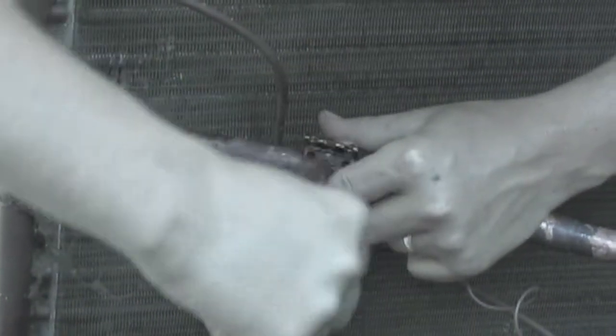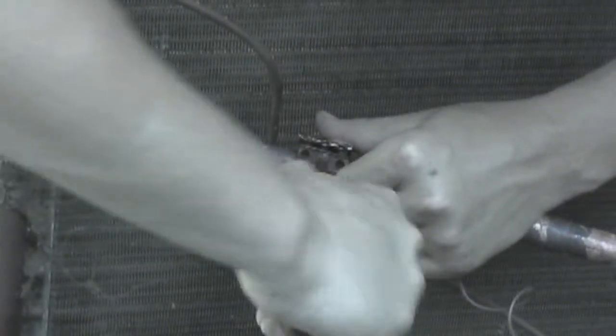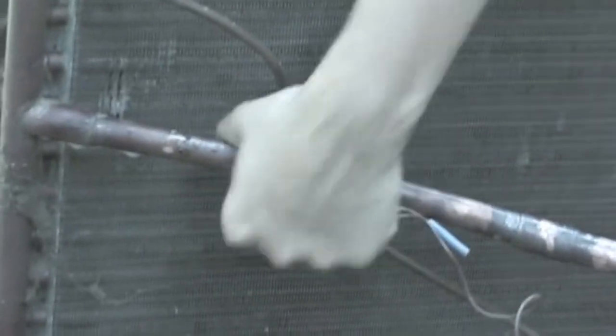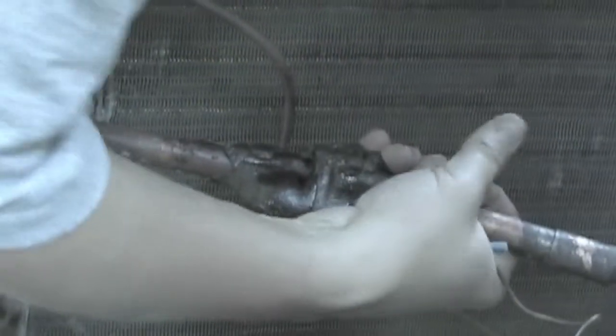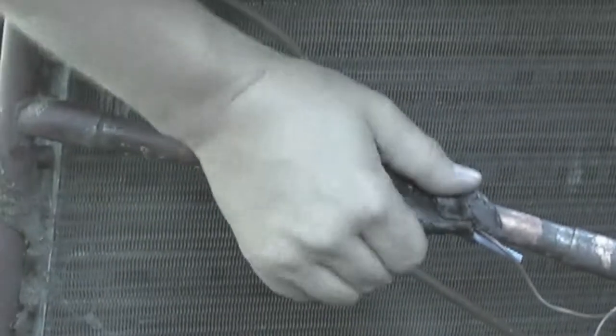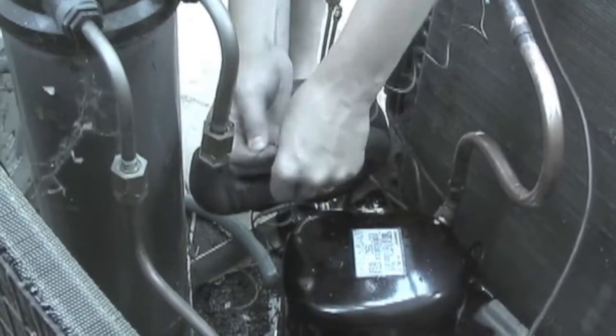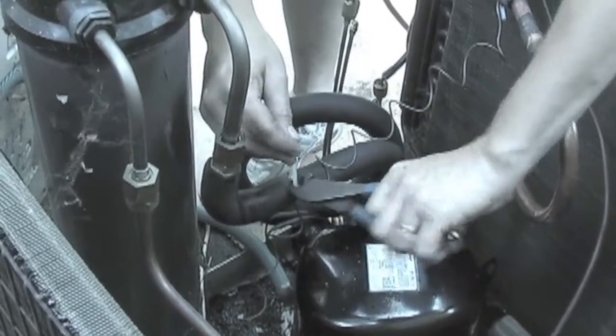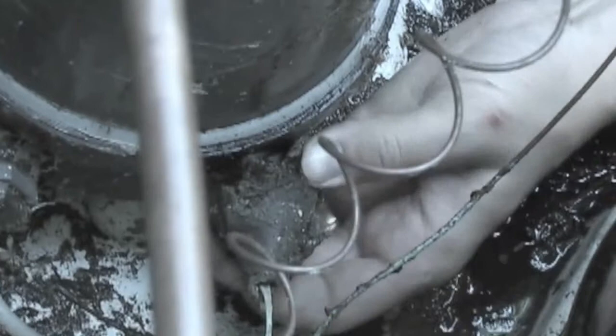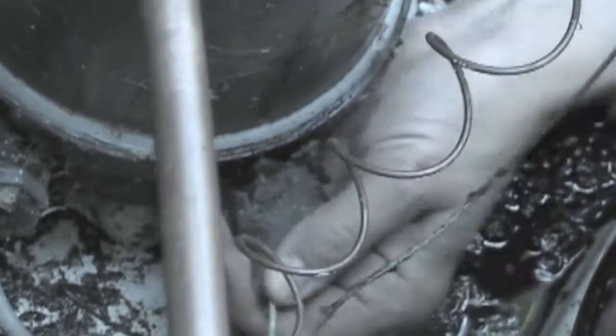Reattach the TXV bulb to the suction line. Make sure that it's on the side of the suction line, not the top or the bottom. Apply cork tape to the TXV bulb to insulate it from the outside air. Secure the capillary to prevent rubbing with other parts of the heat siphon. Reinsert the thermostat bulb into the heat exchanger and insulate it with cork tape.